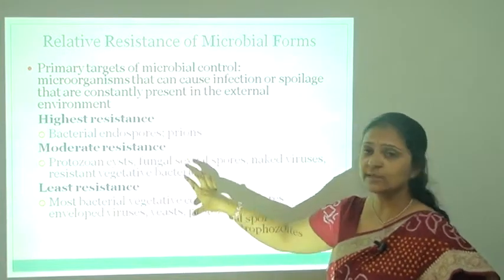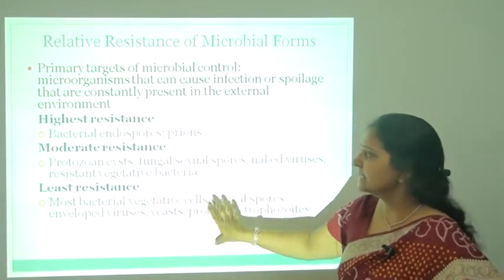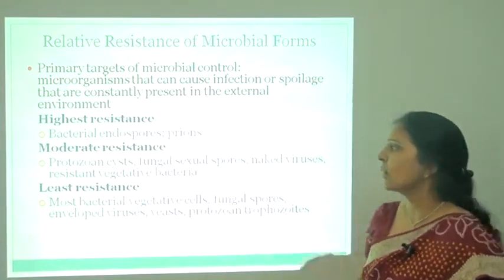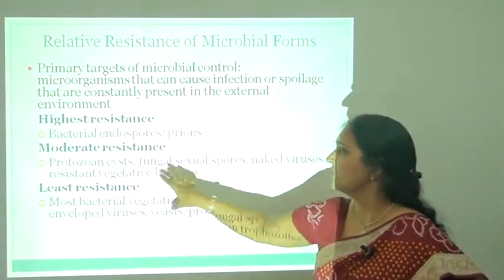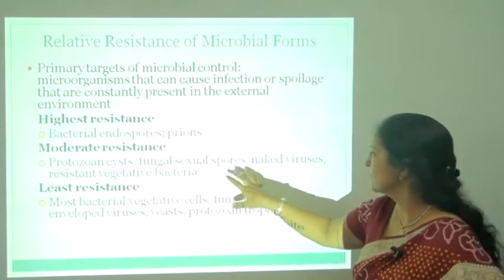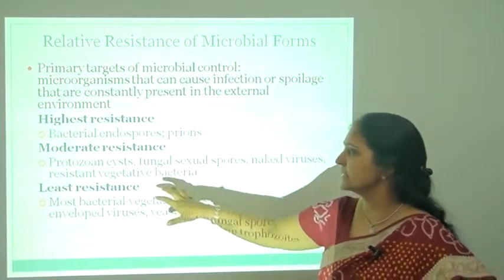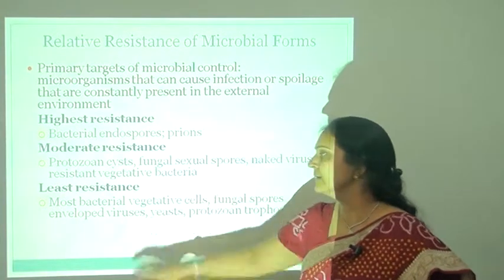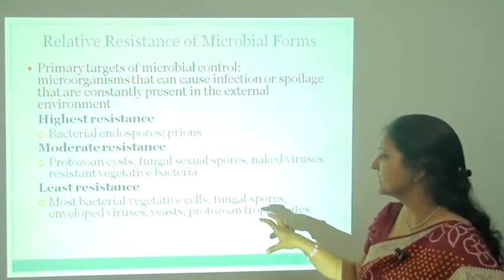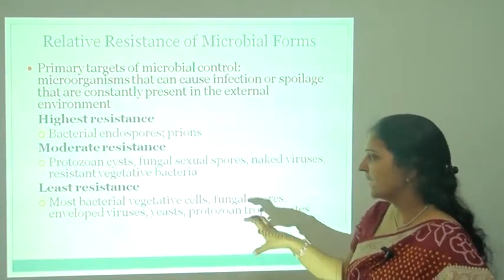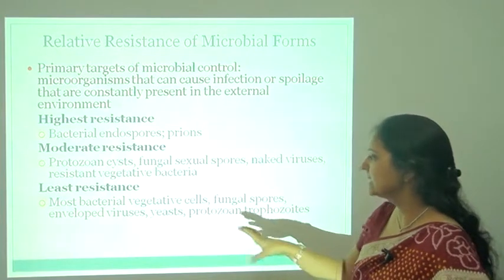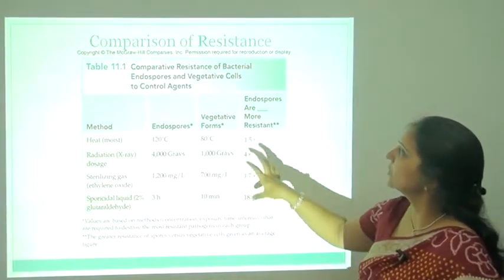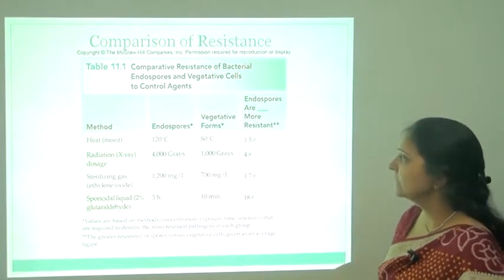The highest resistant microorganisms are bacterial endospores and prions. Moderate resistance organisms include protozoa, fungal spores, some naked viruses, and some resistant vegetative bacteria. The least resistant are most bacterial vegetative cells, fungal spores, enveloped viruses, yeast, and protozoa. These are comparisons of resistant microorganisms.